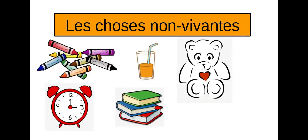Voici des choses non-vivantes. So these are non-living things. These things are non-living. These things do not need air, do not need water, do not need sleep, and do not need food. These are non-living things. They don't grow, and they don't reproduce.